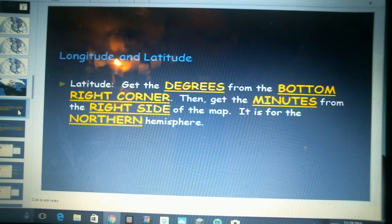Okay, latitude and longitude. We've talked about this before so this should be review for you folks. Remember that latitude, that is how far north and south a location is, and we get degrees and minutes to describe the exact location. The degrees are found in the bottom right hand corner of the map and the minutes are labeled along the right hand side.